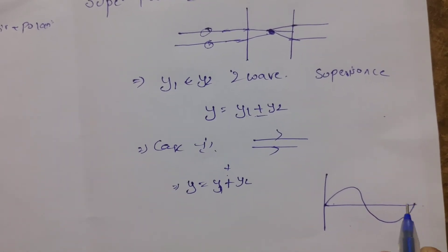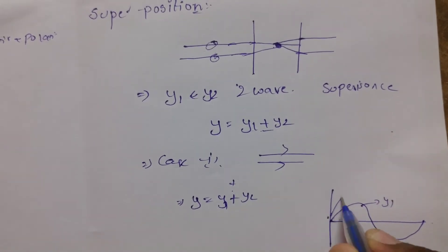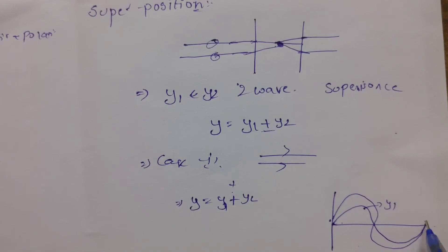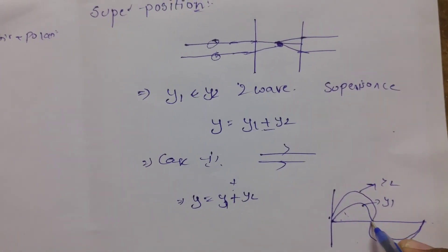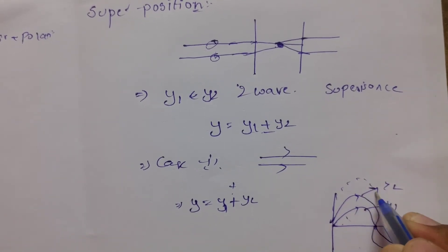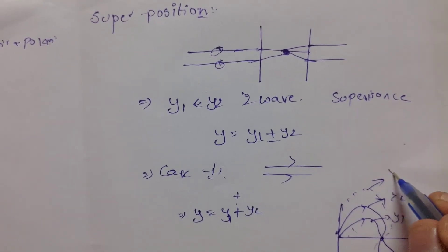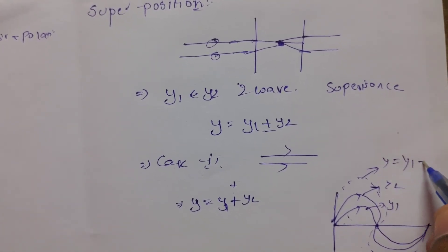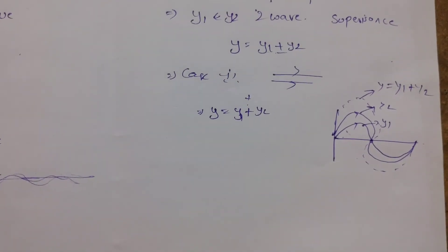Let this be y1 and this be y2. If I impose these two waves traveling in the same direction, applying superposition, the resultant wave is y equals y1 plus y2. This is the first case of superposition.